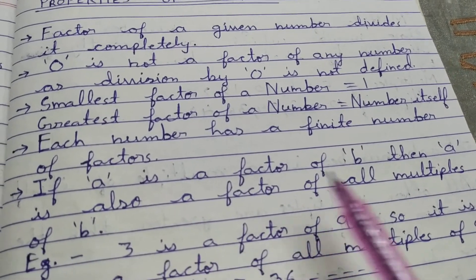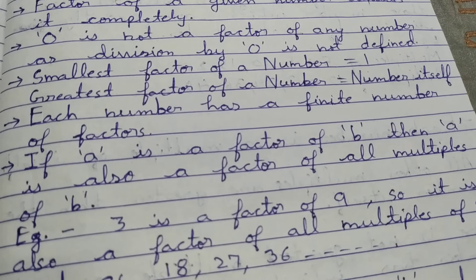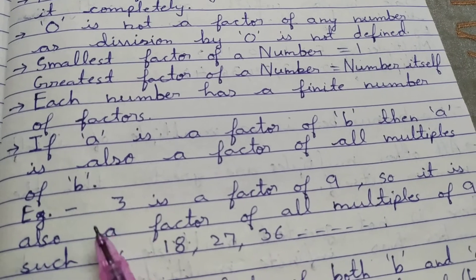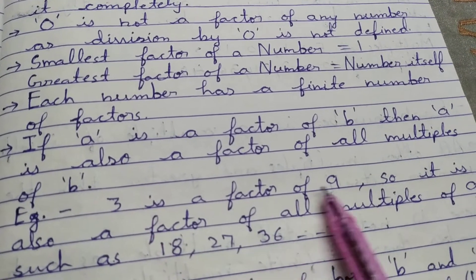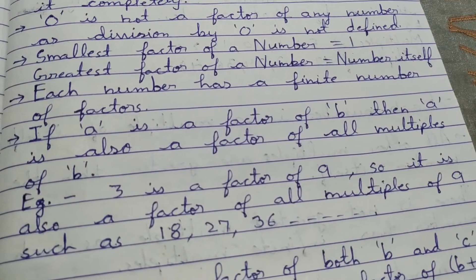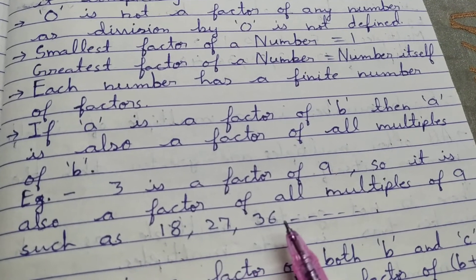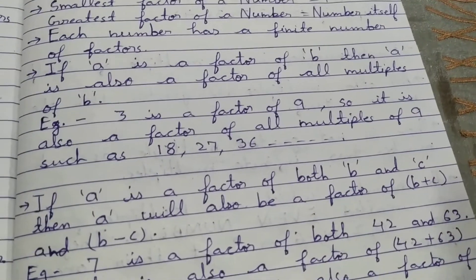If 'a' is a factor of 'b', then 'a' is also a factor of all the multiples of 'b'. For example, 3 is a factor of 9, so 3 must be a factor of all the multiples of 9, such as 18, 27, 36, and so on.